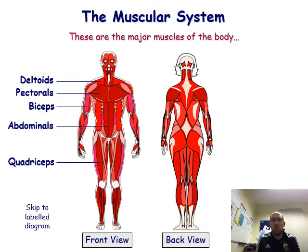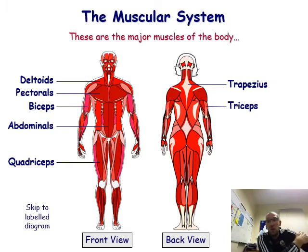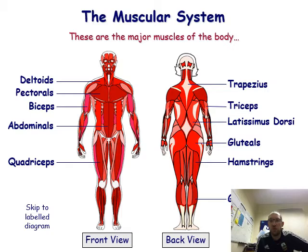Looking at the back of the body: the trapezius is in the upper back and neck area, the triceps are at the back of the upper arm — opposite the bicep. The latissimus dorsi is in the back, the gluteals are your bum, and the hamstrings are at the back of the leg, opposite the quadriceps.